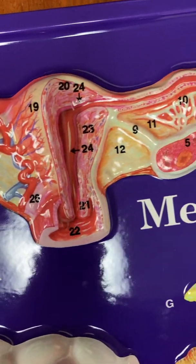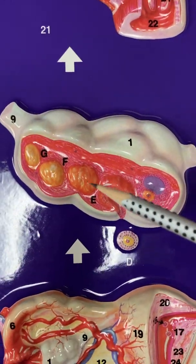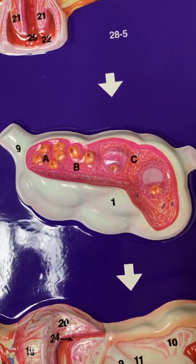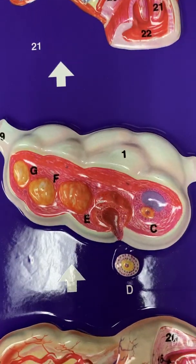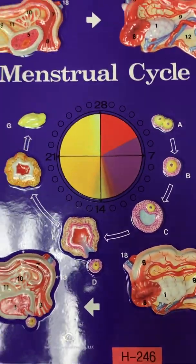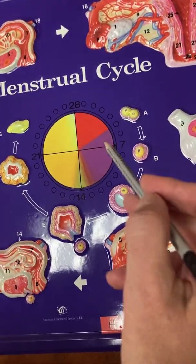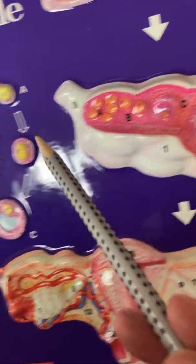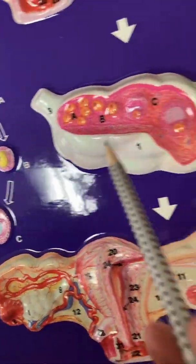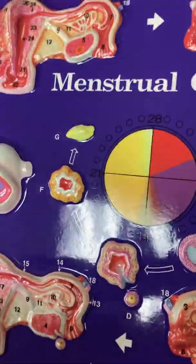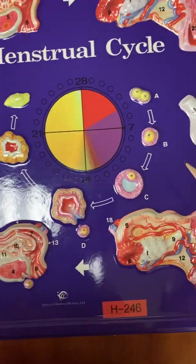So that's it for this model up there, and then this one down here shows follicles in different stages of development. Over here we've got the first half of the cycle, and then over here we have the second half of the cycle. In the middle we have the whole cycle — the letters in the middle of the model (A, B, C) match the letters over here, so you can see these events in the ovary.